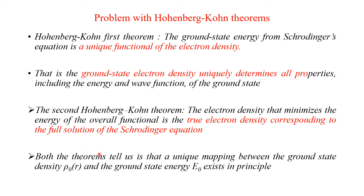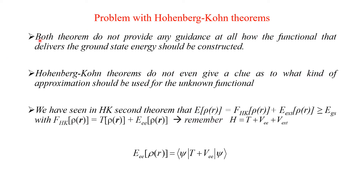That is the important conclusion arrived from the Hohenberg-Kohn theorem, explained in detail in my Lecture 4. Now we will see what are the problems faced with the Hohenberg-Kohn theorem, which we will simply call the HK theorem. The HK theorem does not provide any guidance at all on how the functional that delivers the ground state energy should be constructed, i.e., how to construct the ground state energy.